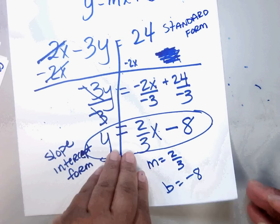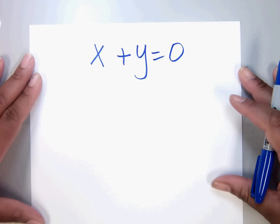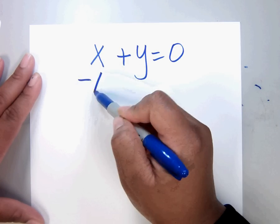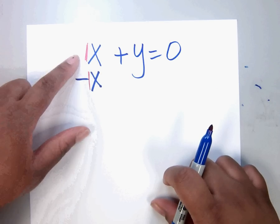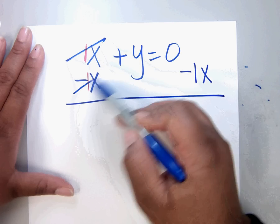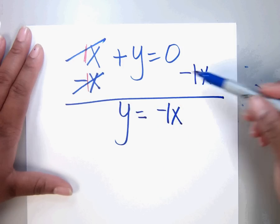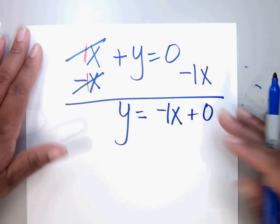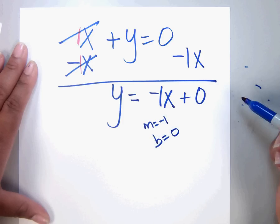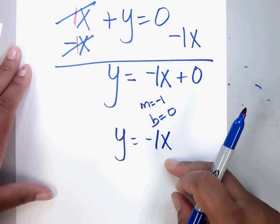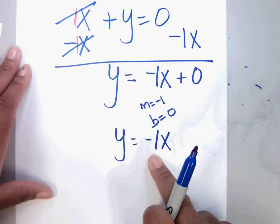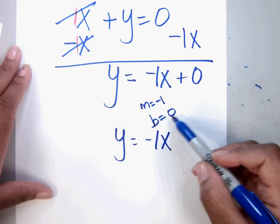Let's do another one. Given x plus y equals 0, we need to move the x — there is a 1 in there. We are subtracting because this 1 is positive, moving it to the other side. It cancels, giving us y equals negative 1x. Some people like to write the plus 0. Now you can see that m is negative 1 and b is 0. This would be a direct variation equation. When there is no plus or minus after your slope and your x, you know that b is 0.